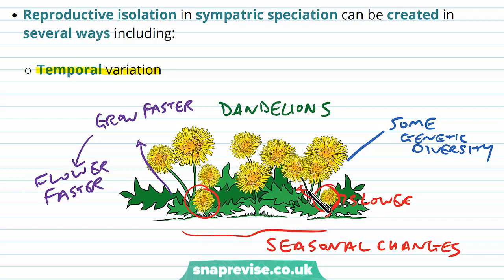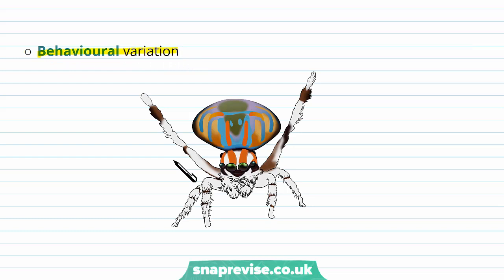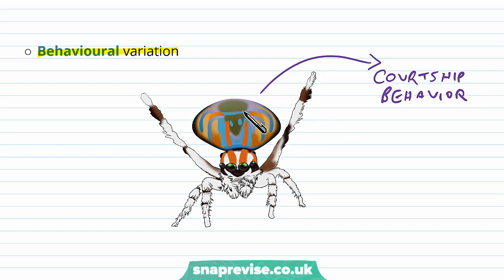There are also behavioral changes or variation. Some insects, birds, and colorful creatures carry out courtship behavior where they only attract certain mates based on particular colors or features. Because of this, they may not breed with many others in their population. If there is enough of a division, they form two groups which look for specific types of behavior. If the difference in behavior between one group and another is large enough, they become isolated and therefore form two new species.